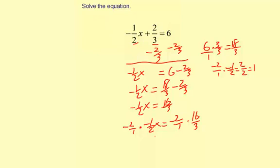So we have 1x, which can be written as x, equals negative 2 times positive 16, multiplying straight across here is negative 32, and then 1 times 3 is 3, so divide by 3. You could leave your answer in this form, or you can do the division to make it a mixed number.